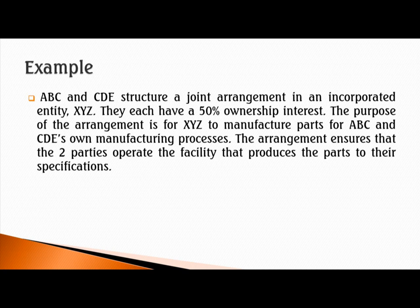Let's illustrate with an example. ABC and CDE structure a joint arrangement in an incorporated entity XYZ, each holding a 50% ownership interest. ABC is one party, CDE is another, and they have established a separate entity called XYZ — which is turning more towards joint venture. But remember, do not rush to a conclusion; you must consider the three factors: legal form, terms and conditions, and other relevant facts and circumstances.